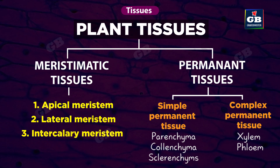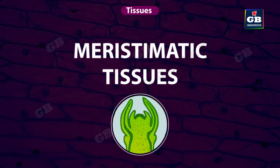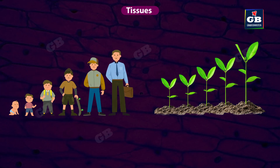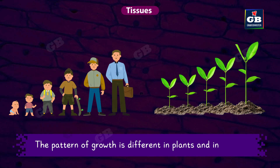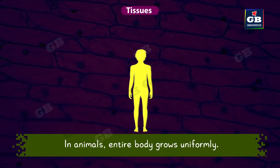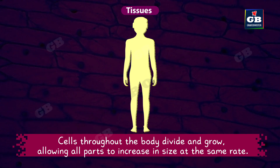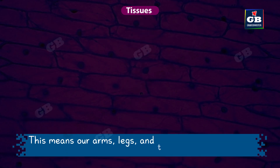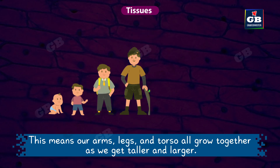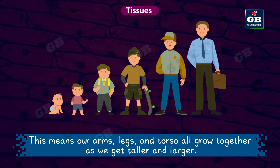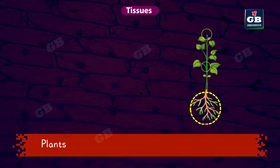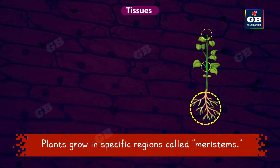Now let us know about the location, structure, and functions of each of these tissues. Let us begin with meristematic tissues. We know that plants and animals grow, but the pattern of growth is different. In animals, the entire body grows uniformly — cells throughout the body divide and grow, allowing all parts to increase in size at the same rate, so arms, legs, and torso all grow together. Whereas plants grow in specific regions called meristems.